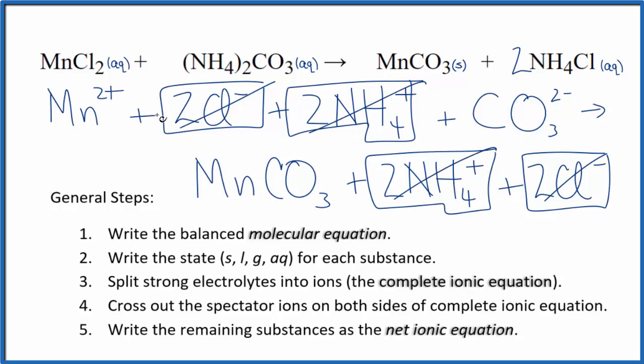What's left, that's the net ionic equation for MnCl2 plus (NH4)2CO3. I'll clean this up, write the states. We'll have our net ionic equation.